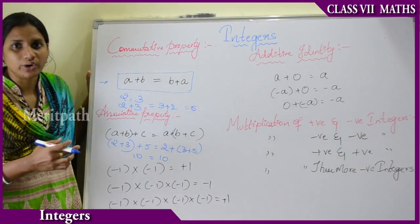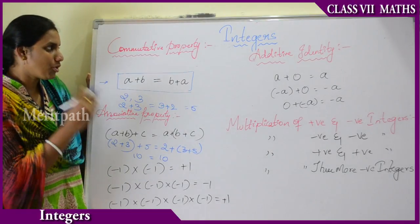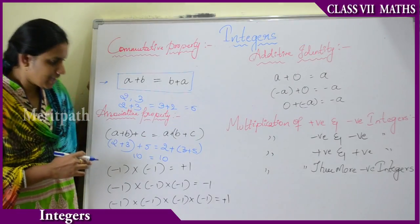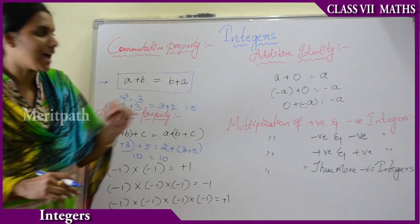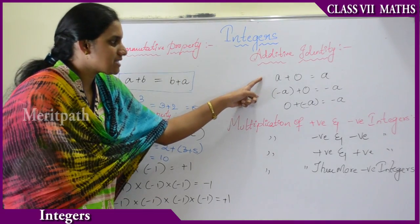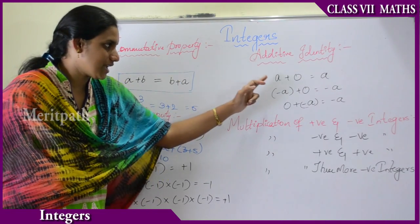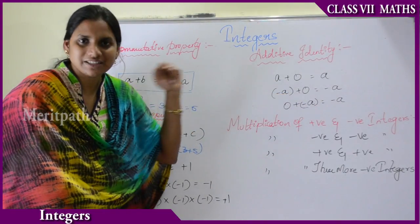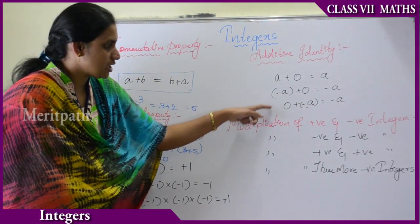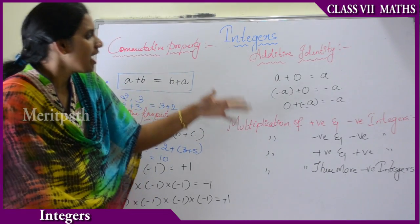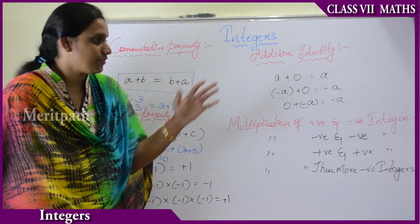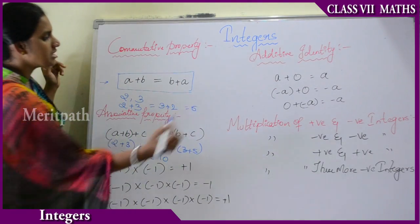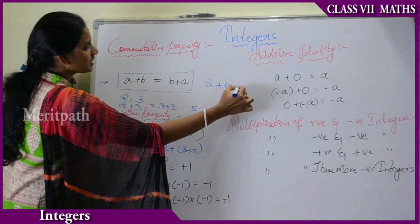A property holds good when it satisfies both the left-hand side and the right-hand side. Now let us see one more property: the additive identity. That is, a plus 0 equals a, and minus a plus 0 equals minus a, and 0 plus (minus a) equals minus a. That means whatever the number, if you add it with 0, the result will be the same number. For example, 2 plus 0 equals 2.